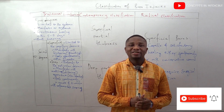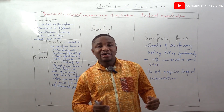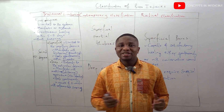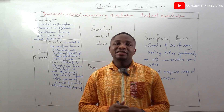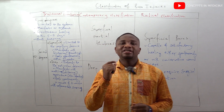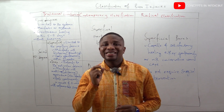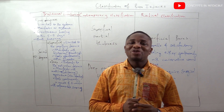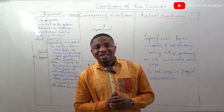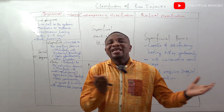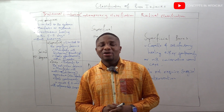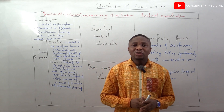We are going to be looking at ways by which burn injuries are classified. We are going to be looking at three classification methods: the first is the traditional classification, the second is the contemporary classification, and the third is the radical classification. These three classifications are correlated among themselves, and we are going to be looking at that correlation.